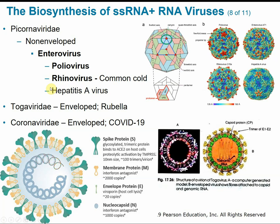Examples of single-stranded RNA positive-sense viruses include picornaviridae, which are non-enveloped — these are enteroviruses, poliovirus, the common cold rhinovirus, and hepatitis A virus. Togaviridae is enveloped and causes rubella disease. Coronaviridae is an enveloped virus with spike proteins on its surface and a single strand of RNA that causes COVID-19. A potential exam question: SARS-CoV-2 is a single-stranded RNA positive-sense virus.